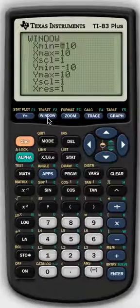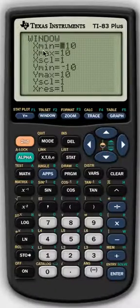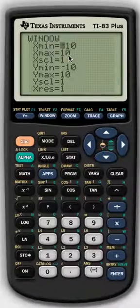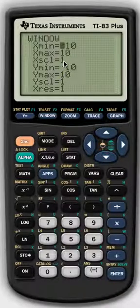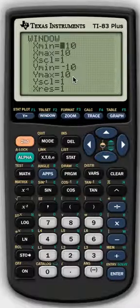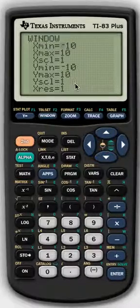If you go to Window, the Window button will show us that, yes, in fact, x min is negative 10, our x-max is 10, and that scale, x-scale S-C-L, is kind of what the increments are going up by. And the y also does the same thing, so our y increments are the same.